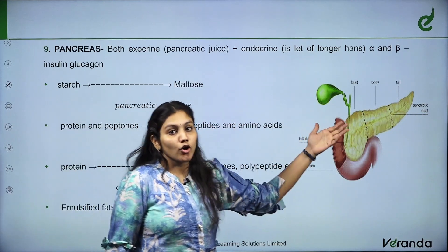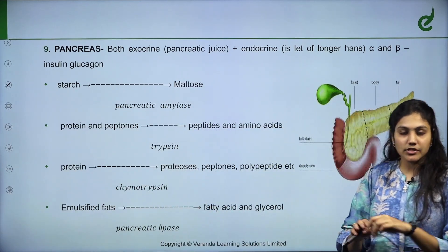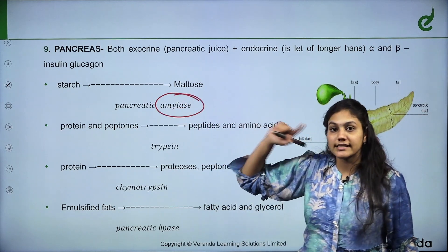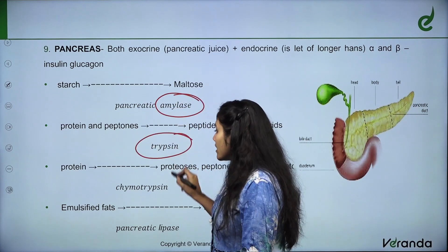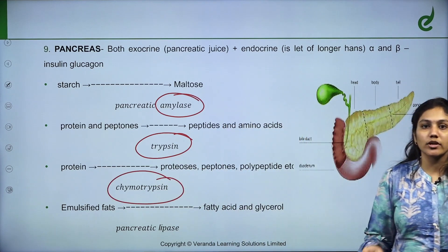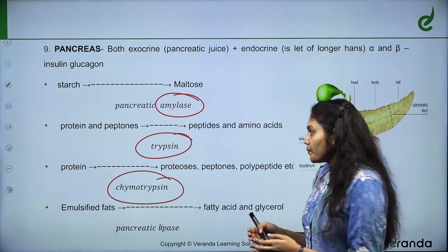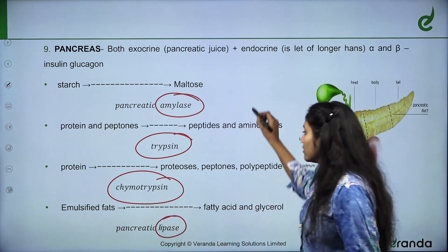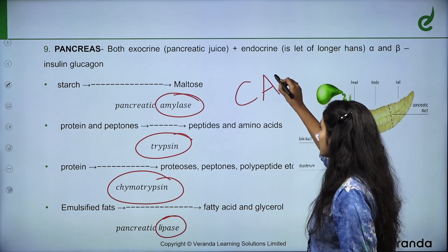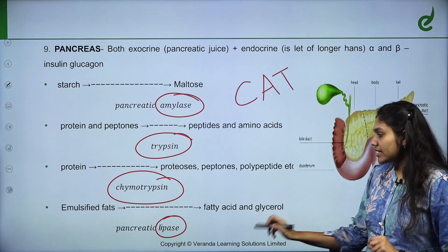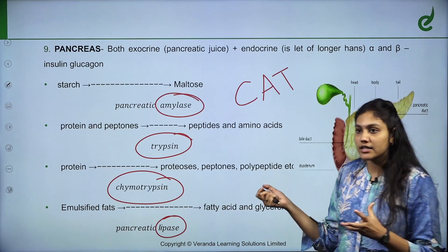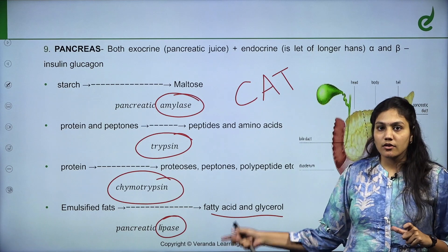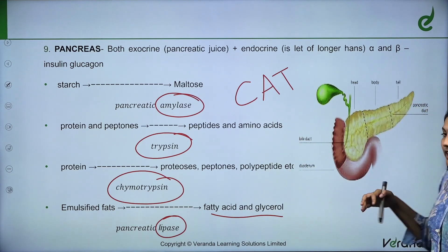We already discussed the endocrine function of the pancreas; now its exocrine digestive juice secretion is the major function. Enzymes include: pancreatic amylase, trypsin, chymotrypsin, and lipase. Amylase breaks down starch; trypsin and chymotrypsin break down proteins; and pancreatic lipase helps with fat — breaking it into fatty acids and glycerol, the simplest form of fat. These enzymes reach the duodenum through the pancreatic duct.